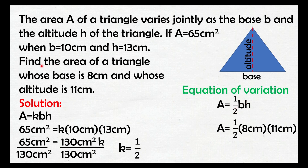Sasagutin naman natin yung tanong dito: find the area of a triangle whose base is 8 centimeters and whose altitude is 11 centimeters. Palitan lang natin si B ng 8 centimeter at si H ng 11 centimeter. So simplify lang — 1 half times 8 times 11, that is 44 square centimeters. So yun yung sagot natin sa pinapatanong dito na area.